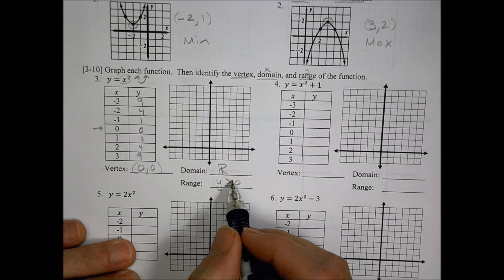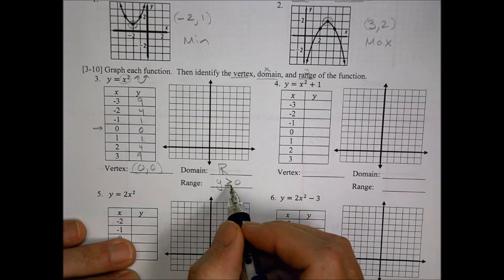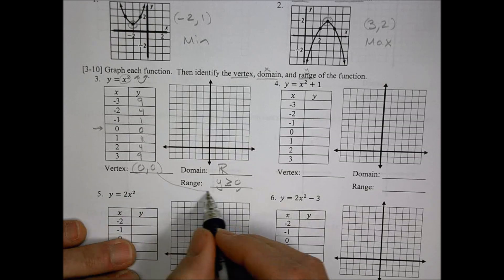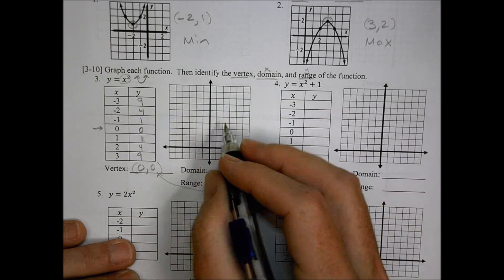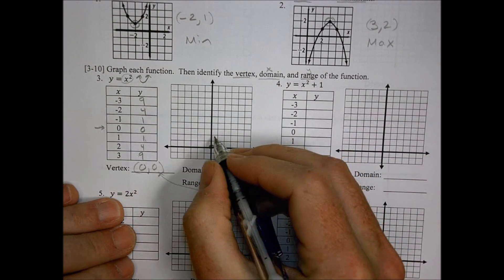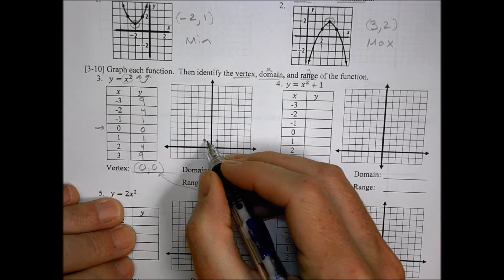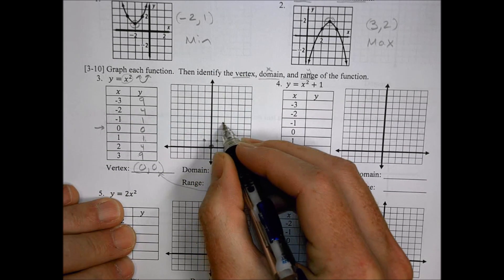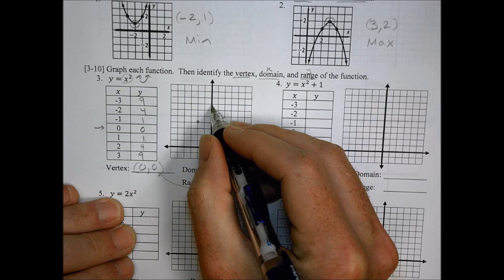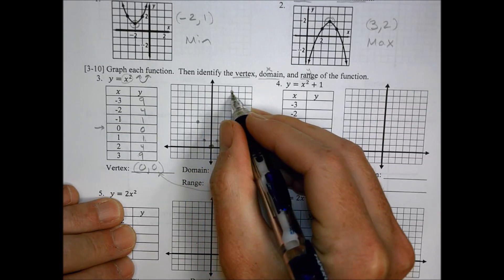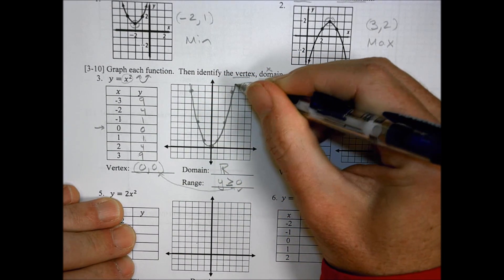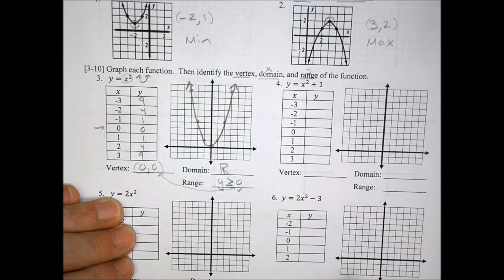Our domain in this case is going to be all real values for x. For the y value, we would say it's everything greater than or equal to zero. Because it's positive, it's going to be greater than or equal to, and this value comes off of that y vertex value. If I plot this out, at one we're at one — so we're here and here. At two we're at four, and you can reflect it across like that. At three we're at nine. So that's what that one's going to look like.